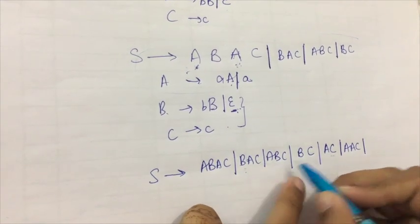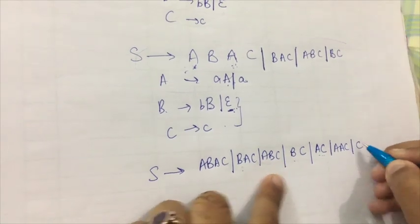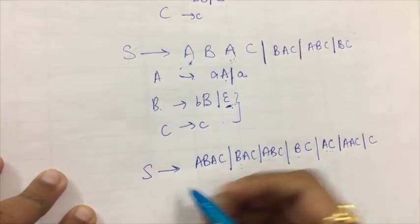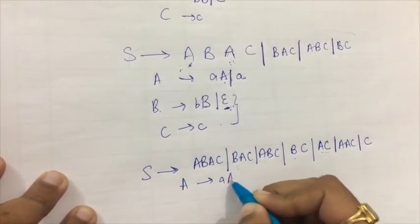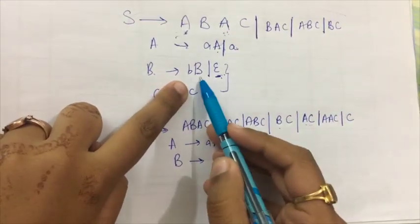When I put B as null in this production rule, it will again count to AC, which we have already written, so we will not write it down again. When I put B as null over here, it will give me C, so that is a new production rule. And A will obviously be the reduced A, and then B also I'll take as BB.